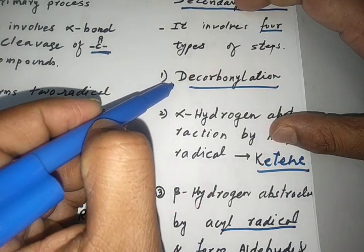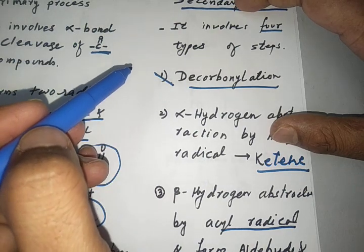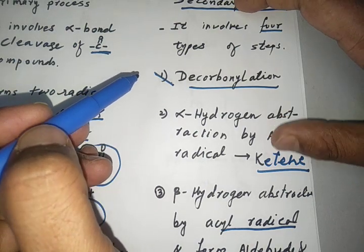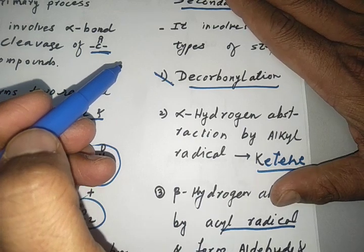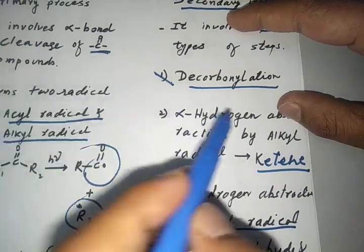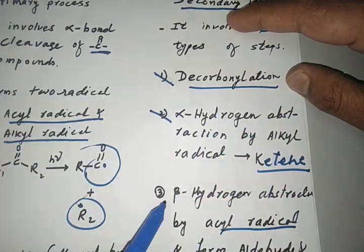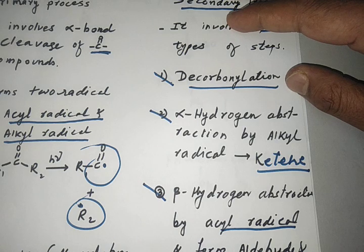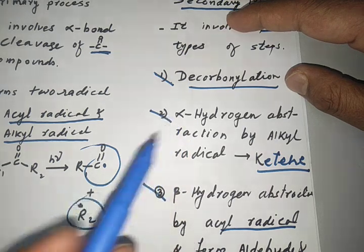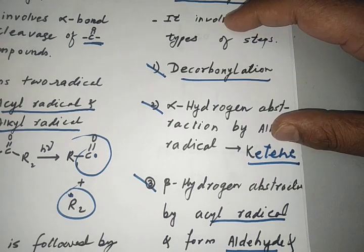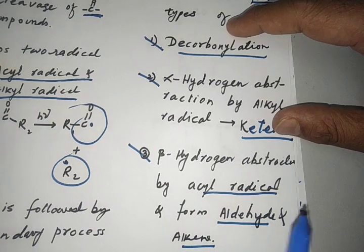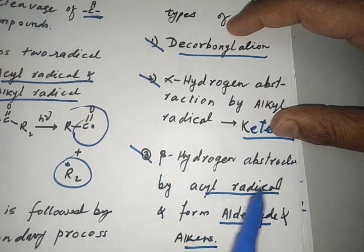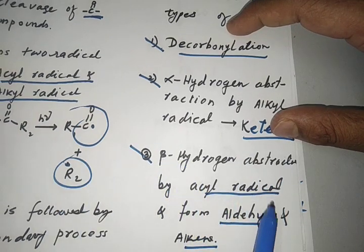To summarize the secondary process: if the ketone has alpha and beta carbons with hydrogens, it will follow alpha hydrogen abstraction and beta hydrogen abstraction. Alpha hydrogen abstraction by the alkyl radical generates ketene — the carbonyl carbon becomes a ketene functional group. If the alkyl radical carries a beta hydrogen, it is abstracted by the acyl radical, forming an aldehyde and an alkene.